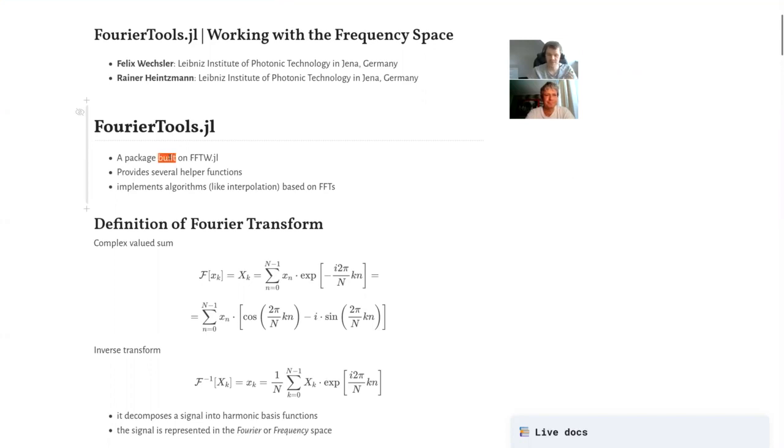So FourierTools is a package basically built on FFTW. We don't provide our own Fourier Transform routine - for that we use the FFTW package. However, what we do is provide several helper functions for working with Fourier space, especially like shifting and boundary handling. And we implement a lot of algorithms based on FFTs, for example, like image rotation, image interpolation, or shifting.